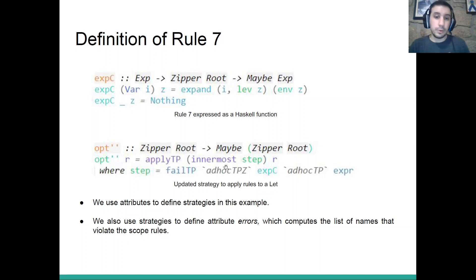Now we can go to our opt function for the applying of the optimization, in which we used the innermost strategy that we have seen before, and we are going to keep it almost equal, but we are only going to add here adHocTPZ with expc. So this is basically sequential composition also with expc. Step will try to apply expr, if it fails it will apply expc, and if it fails, it fails. In this case, we managed to define the 7 rules, in which the 7th was more complex because we needed contextual information, and for that we used attributes to define our strategy.